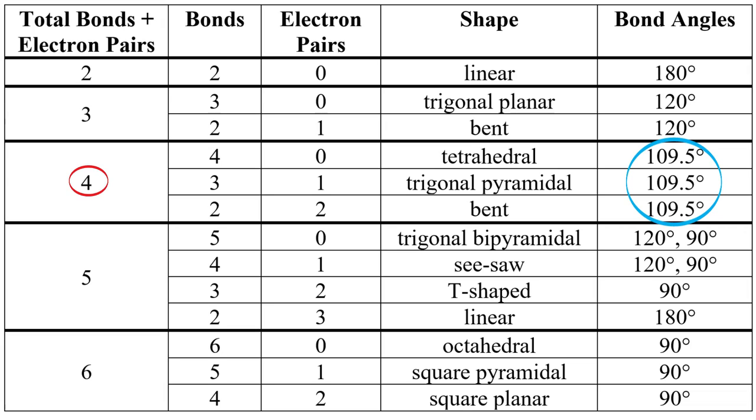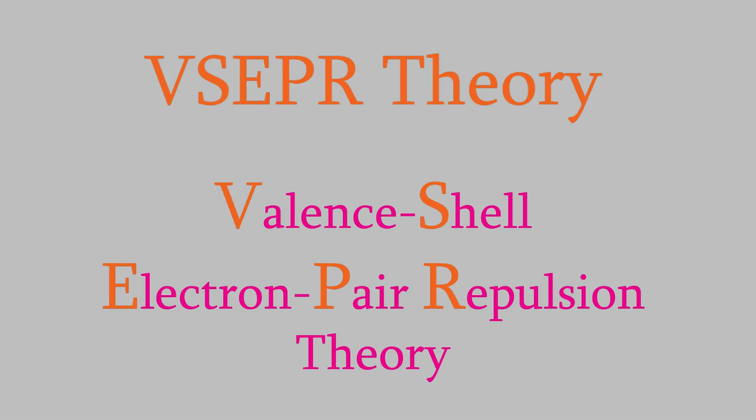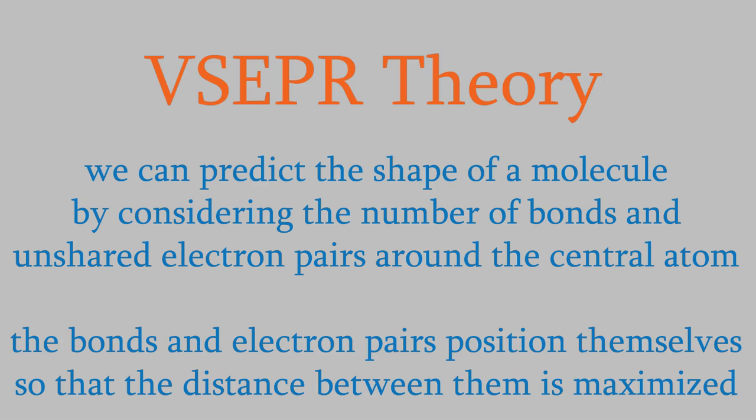This concept is important enough to have its own name. In a nutshell, it says that we can predict the shape of a molecule by considering the number of bonds and unshared pairs around an atom. The bonds and electron pairs position themselves so that the distance between them is maximized. Now that we know that, we can use VSEPR theory to find the shapes of some molecules we used in previous videos.